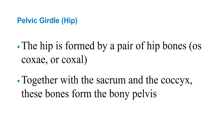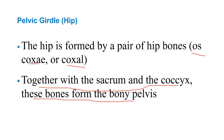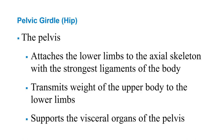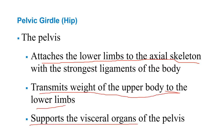The pelvic girdle or hip is formed by a pair of hip bones, the os coxae or coxal bones. Each side has three parts: the ilium, the ischium, and the pubic bone. Together with the sacrum and the coccyx, these bones form the bony pelvis. The pelvic girdle attaches the lower limbs to the axial skeleton, transmits the weight of the upper body to the lower limbs, and supports the visceral organs of the pelvis.